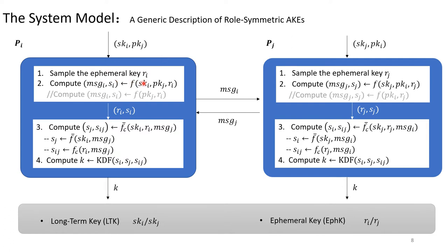First, it will sample the ephemeral key Ri. Then, it will compute MSGi and Si using the function F. Then, it will send out the message MSGi. After receiving the message sent from Pj, MSGj, it will compute Sj and Sij using the function F bar or FC bar. This function can also be subdivided into F bar and FC to compute Sj and Sij respectively. Finally, it will derive the session key using the three key materials, Si, Sj and Sij.